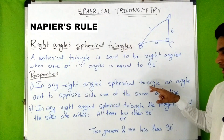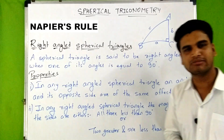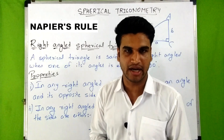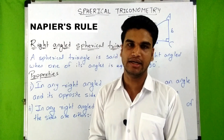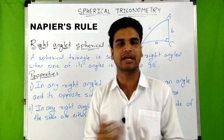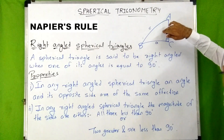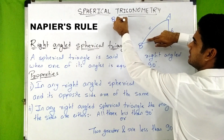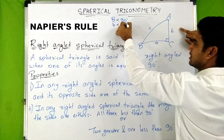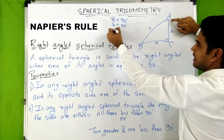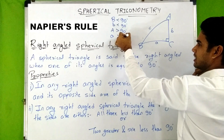The first property: in any right-angled spherical triangle, an angle and its opposite side are of the same affection. Same affection means if an angle is less than 90 degrees, the side opposite to it will also be less than 90 degrees, and if an angle is greater than 90 degrees, the side opposite to it will also be greater than 90 degrees. For example, if angle B is less than 90 degrees, then side small b will also be less than 90 degrees, and if angle A is greater than 90 degrees, then side small a will also be greater than 90 degrees.